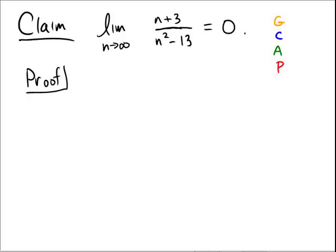And we're going to follow the typical epsilon N proof here, which I like to call putting on the G cap. And so it has four steps to it: Given, choose, assume, and prove.